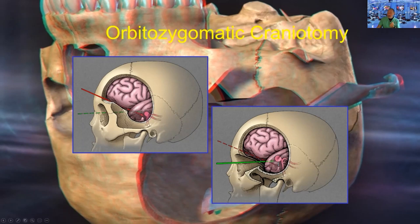The superorbital rim has been taken out, which allows me to change the trajectory. For example, if I have a suprasellar lesion or a high-riding basilar artery going up along the dorsum sellae — as you can see, the dorsum sellae is always above it — taking down the superorbital rim allows me to incline the trajectory all the way up.